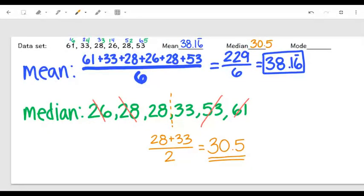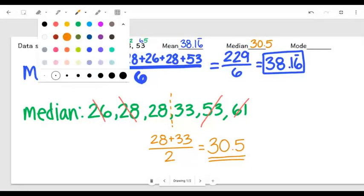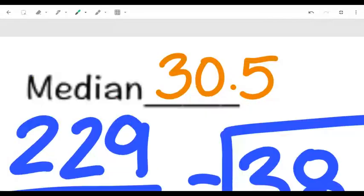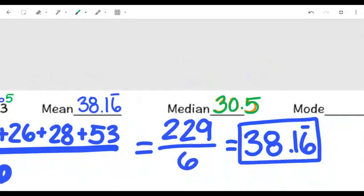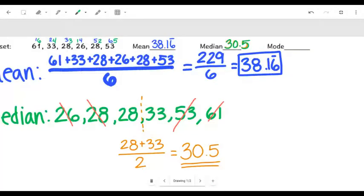30.5. Now if we had a number that was there in our original data set, that would be our median. But in this case, because there was not a number directly in the center, it's going to be between those two middle numbers. Therefore, we have a median of 30.5. This one is not repeating, this is just a flat out decimal. That's going to be our median.